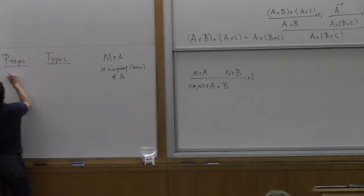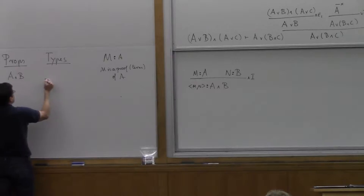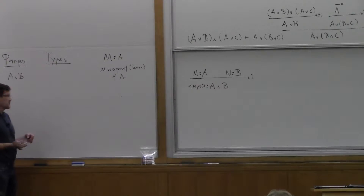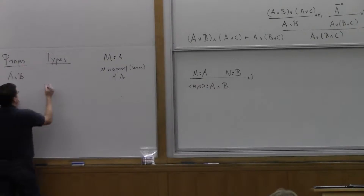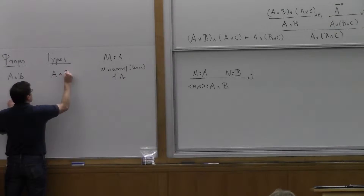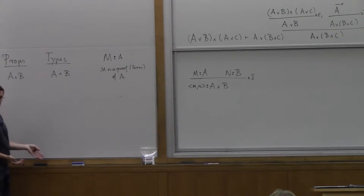The proposition A and B as a type corresponds to a product, so it's going to be something like A cross B, because it's inhabited by pairs. That's what a product type is.